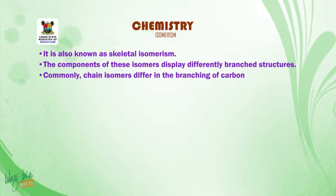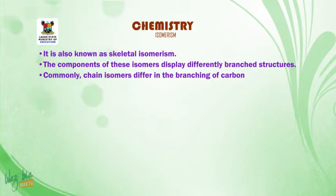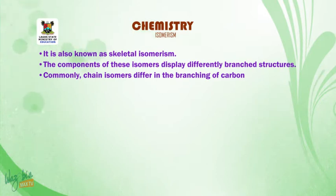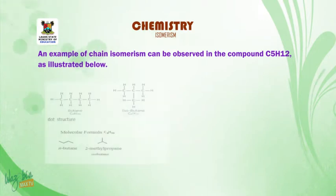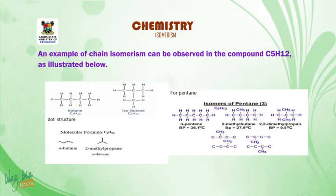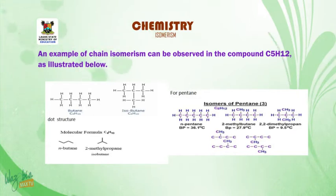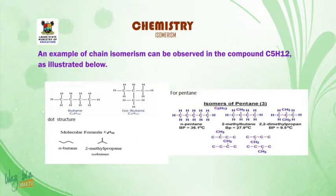Another characteristic of chain isomerism is that the components of these isomers display differently branched structures. Chain isomers differ in the branching of carbon. An example of chain isomerism can also be observed in pentane, C5H12. One of the isomers of pentane is normal pentane; we also have 2-methylbutane, and we also have 2,2-dimethylpropane.